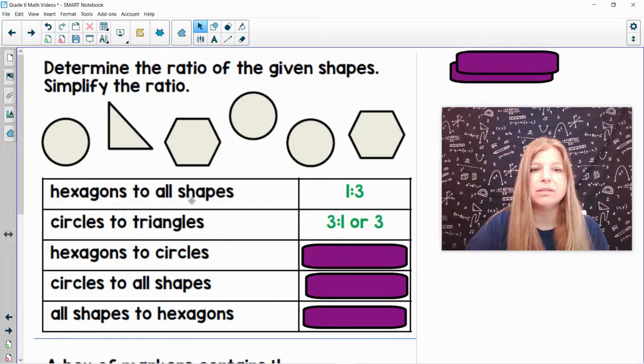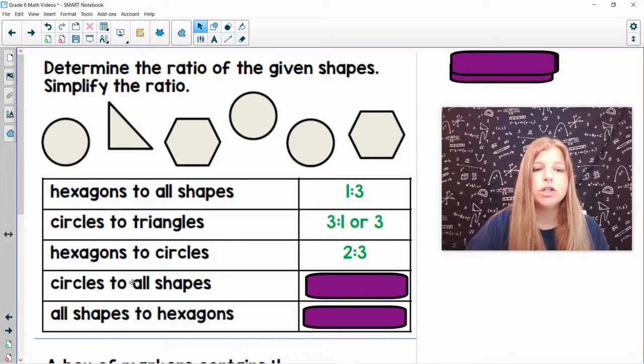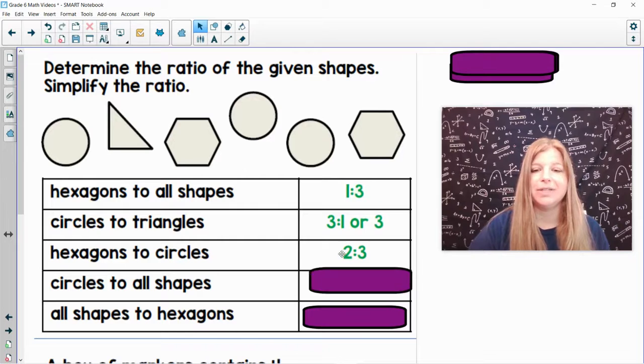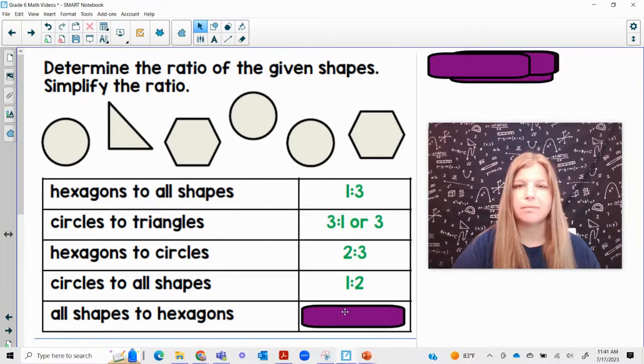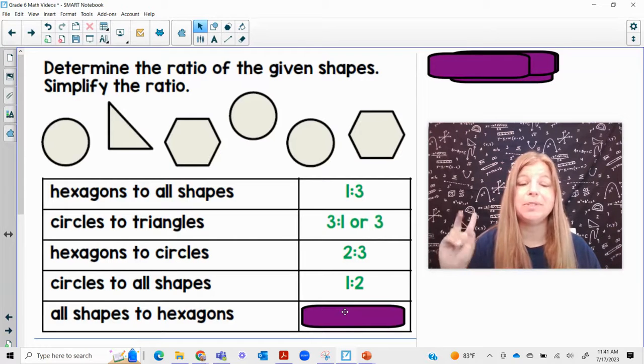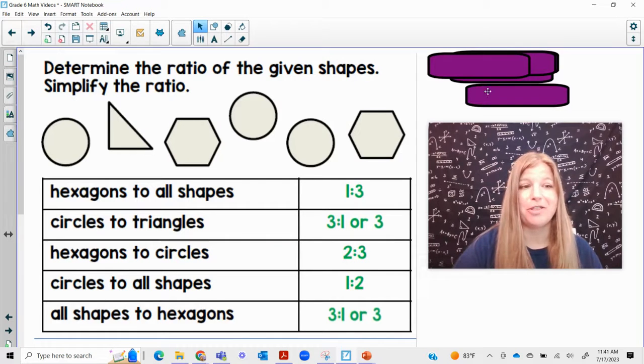Hexagons to circles. I have one, two hexagons. One, two, three circles. So that's two to three. Circles to all shapes. One, two, three to all six shapes. What does three to six simplify to? Three, six is really one-half. One to two. And then the last one. All shapes to hexagons. So there's six shapes. There's two hexagons. Six to two would simplify to three to one, which is just three.